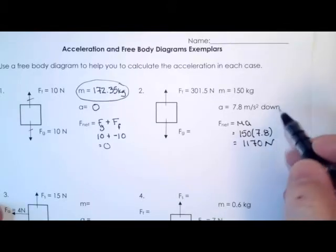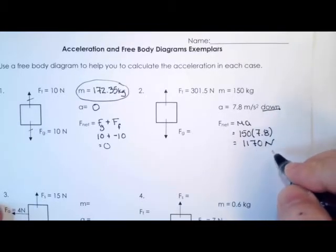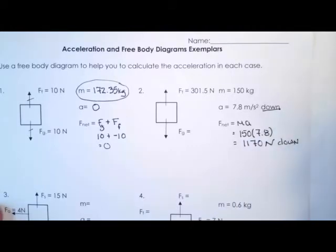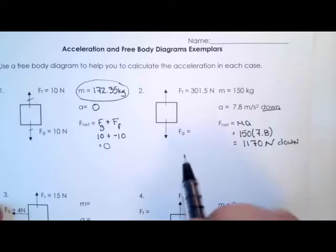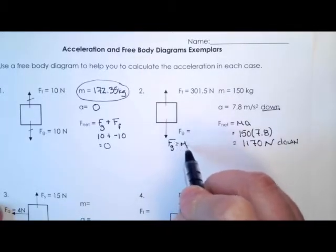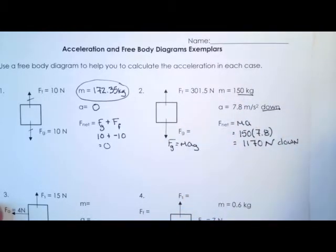And since the acceleration direction is down, the direction on the net force has to be down as well, because remember Newton's second law said that when the net force acts, the acceleration has to be in the same direction as the net force. Now we've got to figure out what the force due to gravity is. You can just do a simple F_g equals mass times the acceleration of gravity, because we do have the mass and we know what the acceleration due to gravity is.